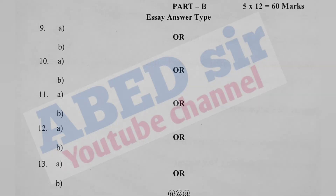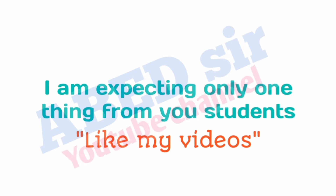Next, in Part B, multiple choice questions are there. Total 5 questions will be asked, you have to answer all these 5 questions, and each question carries 12 marks, so 5 into 12 equals 60 marks you will get from Part B. Part B is 60 marks and Part A is 20 marks, total 80 marks is there for this subject for the semester exam.